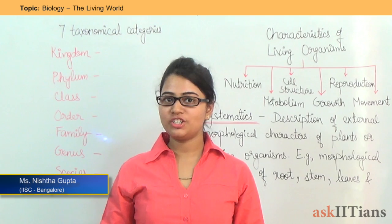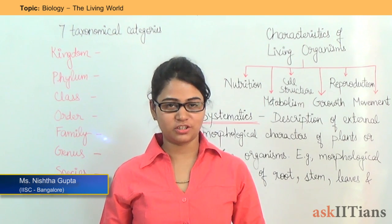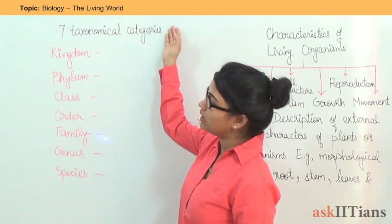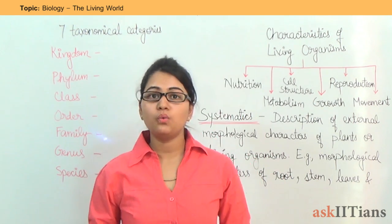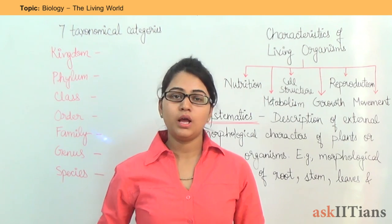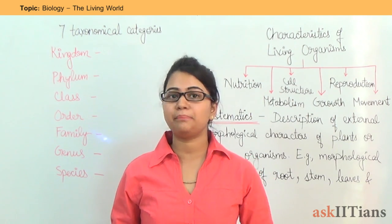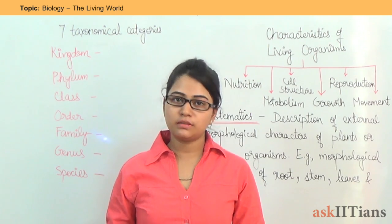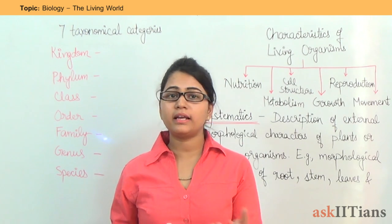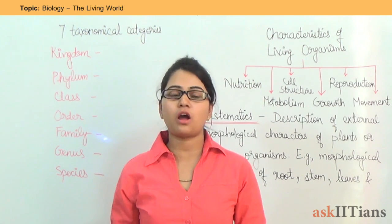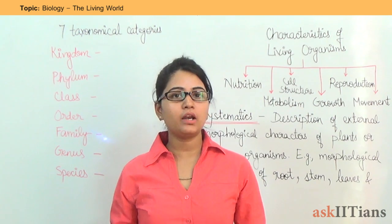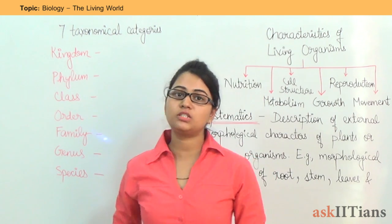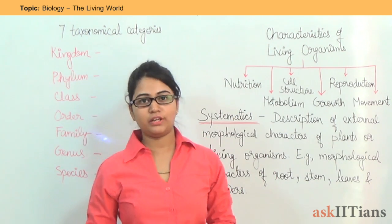Hello students, my name is Nishtha Gupta and I am your biology teacher. Today we are going to start with the first chapter of biology, that is the living world. Under this chapter we are going to discuss many topics: the basic characteristics of living organisms, systematics, few terminologies like taxonomy and nomenclature, the rules of nomenclature, and the seven categories of taxonomy. Let's start with the first topic: characteristics of living organisms.